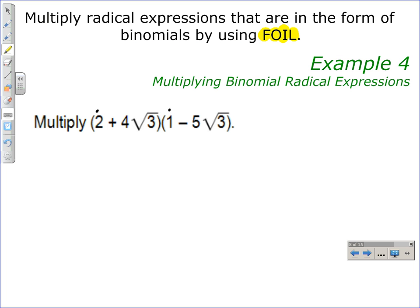Multiplying the first terms here, we get 2 times 1 to give us 2. We multiply the outer terms, which would be 2 times minus 5 square roots of 3, which would give negative 10 square roots of 3.